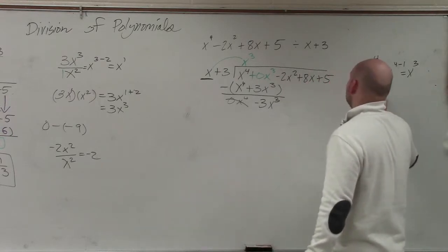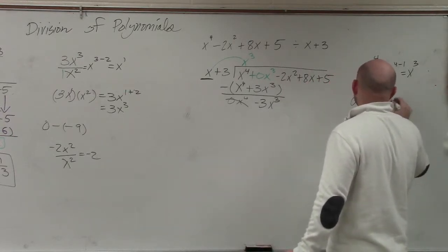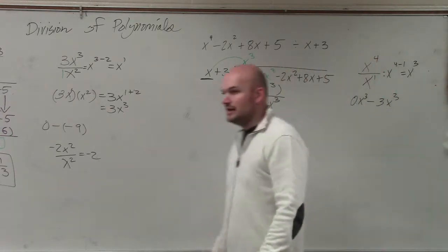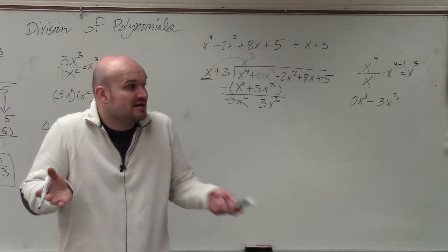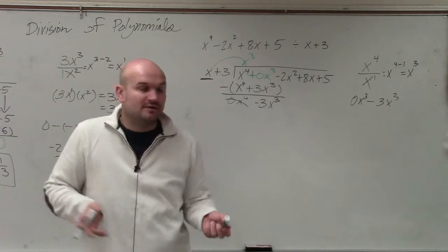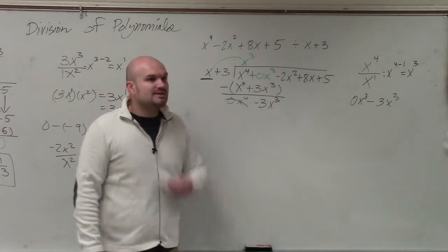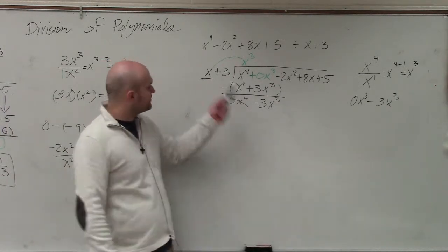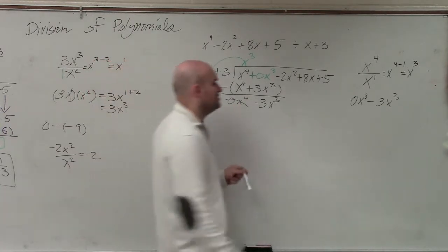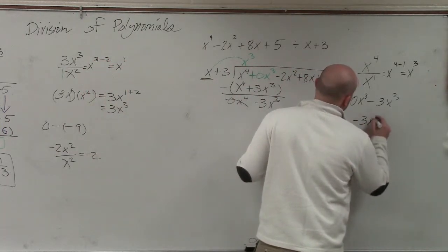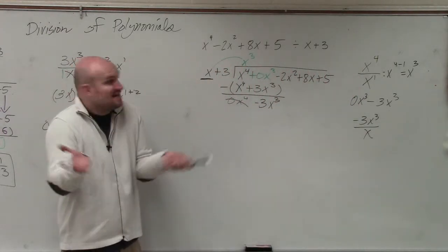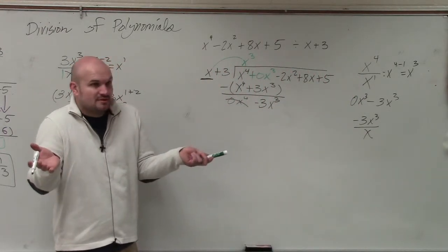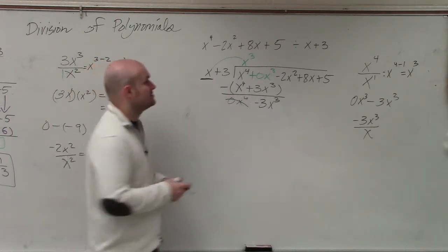And again, guys, if you're having trouble with this, write it out to the side. As long as the terms are x cubed, then you just add or subtract the coefficients. 0 minus 3 is negative 3. So now we do the same process all over again. x divides into negative 3x cubed. So I just write it up again. How many times does x divide into negative 3x cubed? Negative 3x squared.